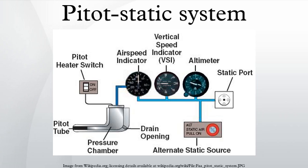A blocked static port is a more serious situation because it affects all pitot static instruments. One of the most common causes of a blocked static port is airframe icing. A blocked static port will cause the altimeter to freeze at a constant value — the altitude at which the static port became blocked. The vertical speed indicator will become frozen at zero and will not change, even if vertical airspeed increases or decreases. The airspeed indicator will reverse the error that occurs with a clogged pitot tube, causing airspeed to read less than actual as the aircraft climbs. When descending, the airspeed will be over-reported.